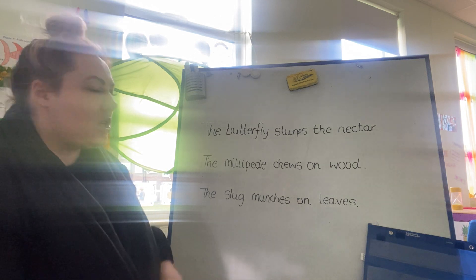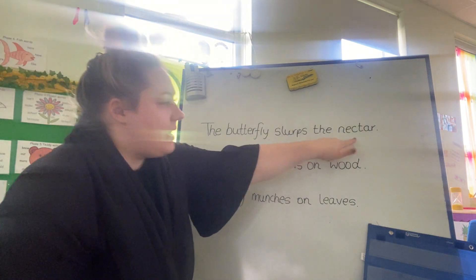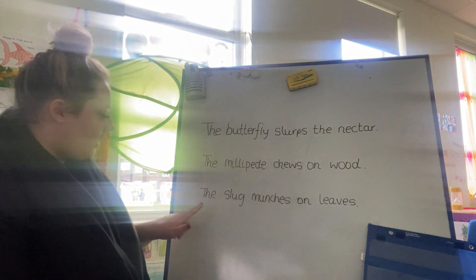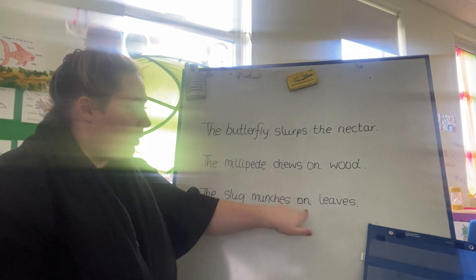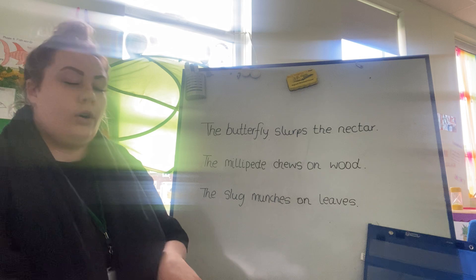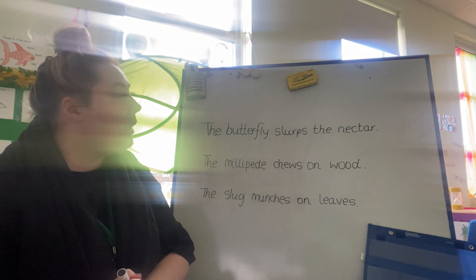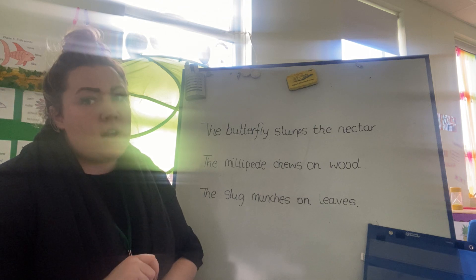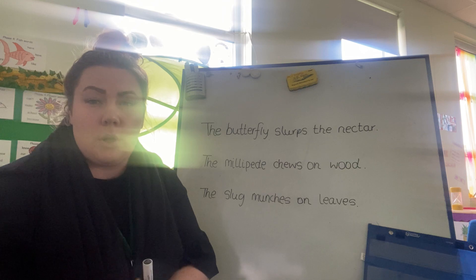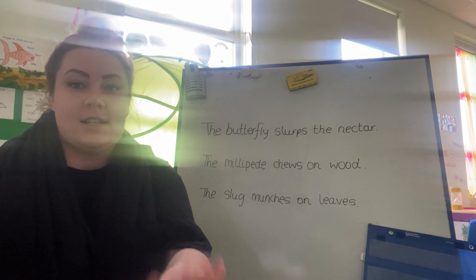Shall we read them all together one more time? The butterfly slurps the nectar. The millipede chews on wood. The slug munches on leaves. Now I want you to have a try at writing these sentences, remembering your finger spaces and your full stop, and I want to see if you can sound the words out yourself. You can use your fingers to pinch the sounds and remember to upload your work onto Class Dojo where we can see it. See you later!